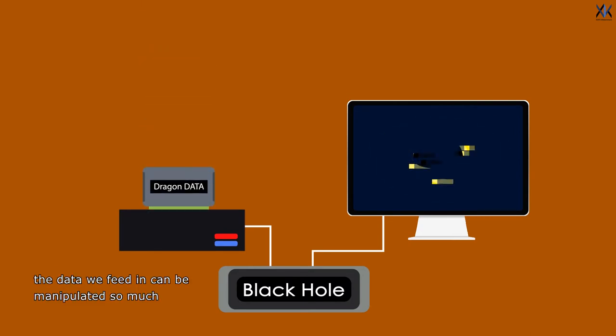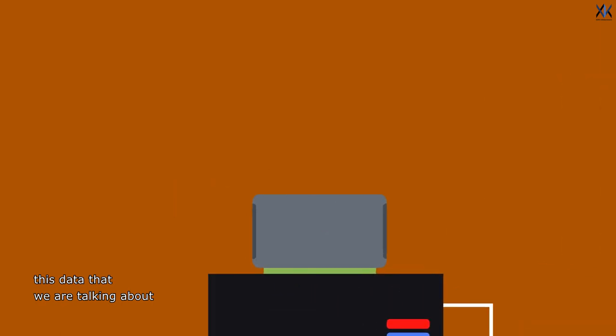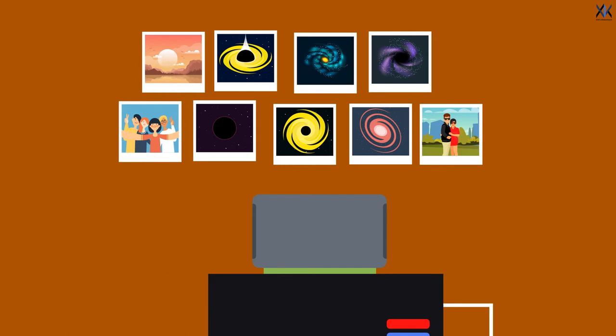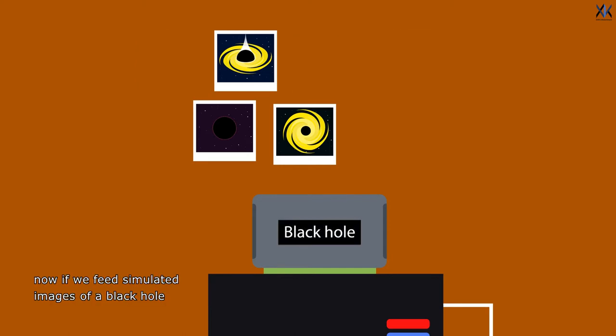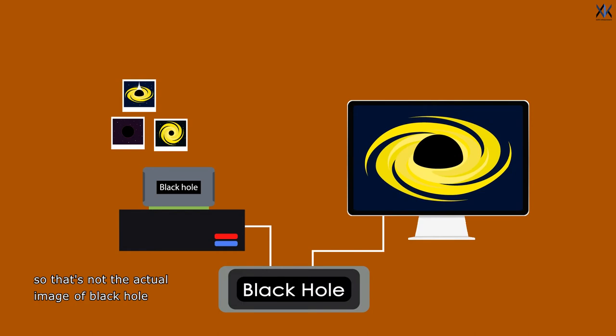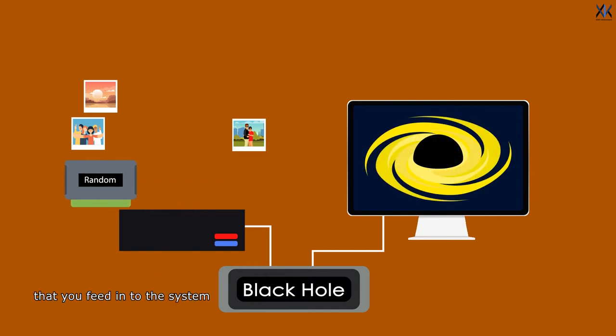Now here comes the trickiest part. The data we feed in can be manipulated so much that we can even get a giant dragon at the center of the image if we wanted. This data that we are talking about is nothing but the different types of images that we are going to use to construct our black hole image. Now if we feed simulated images of black holes into the algorithm, there is a high chance that the algorithm will give you back the image of black hole that you always imagined. So that's not the actual image of the black hole that we are observing. So the algorithm here is biased, which we don't want. A perfect algorithm will be the one which gives the same output irrespective of the type of images that you feed into the system.